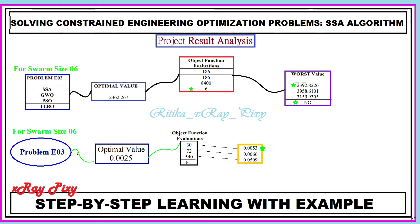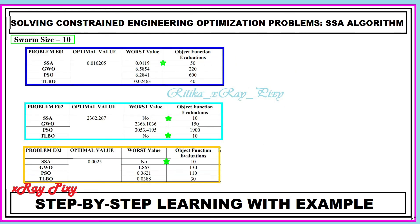For the third problem, you can see the optimal value obtained, the number of evaluations made for each algorithm, and the minimum number of evaluations. Among all, TLBO and SSA provide the optimum value in the minimum number of evaluations. There is no worst value for TLBO, and the minimum worst value is for SSA.